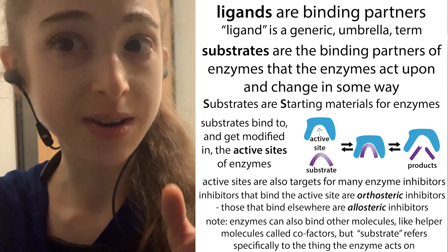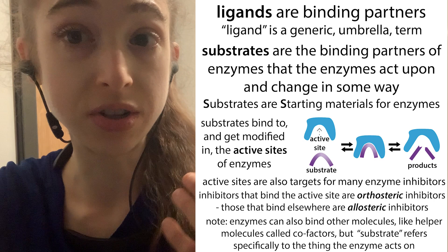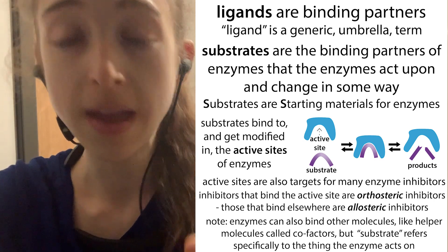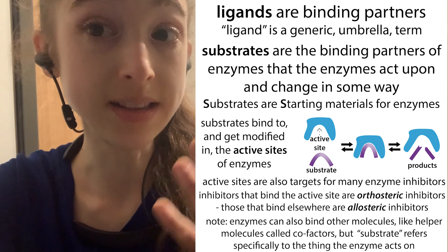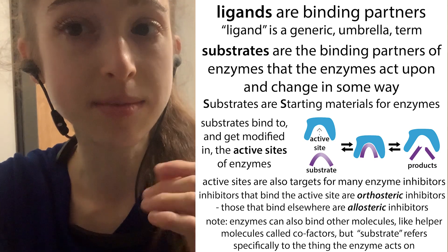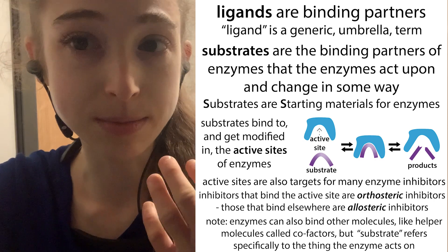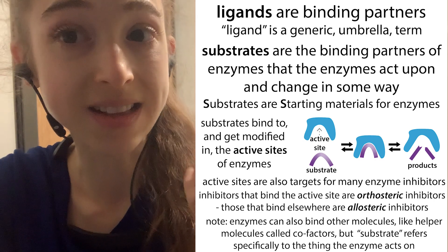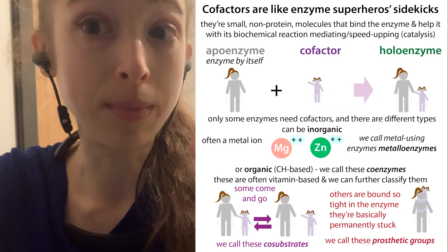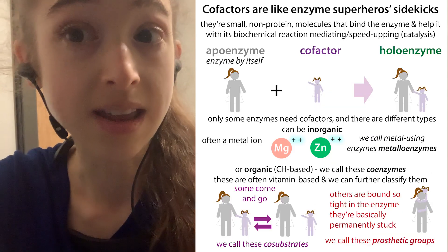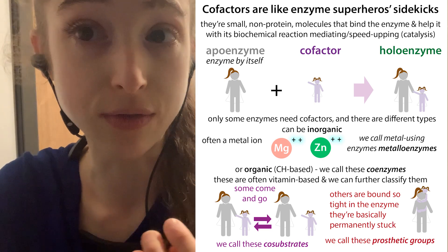That was a lot of terms, so let's do a quick review. Ligand is a generic term for a binding partner. If that binding partner is for an enzyme and the enzyme is actually modifying it, we call it a substrate — the substrate is a ligand that the enzyme is acting on. If the enzyme is also binding to other helper molecules, we call these cofactors, and there are various types we can subclassify.